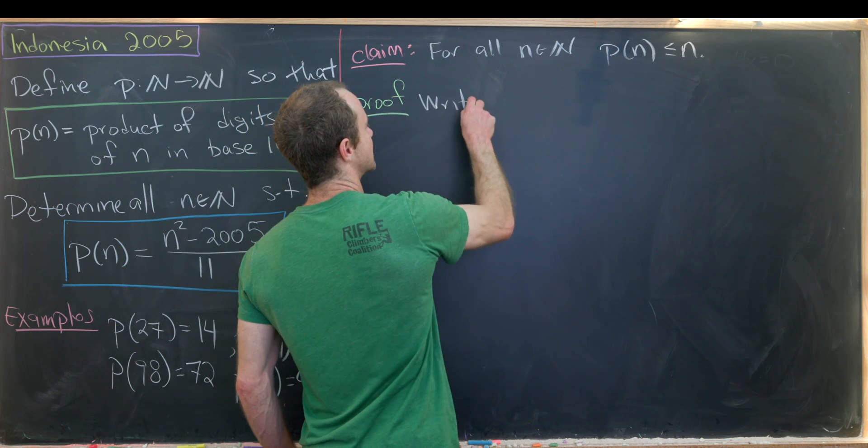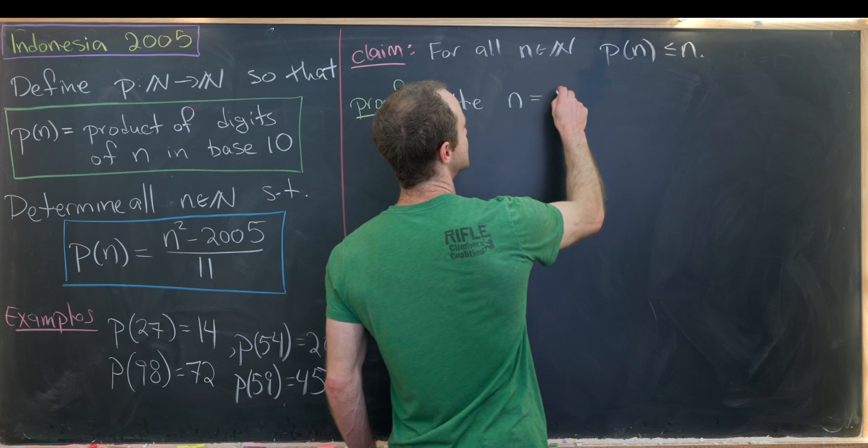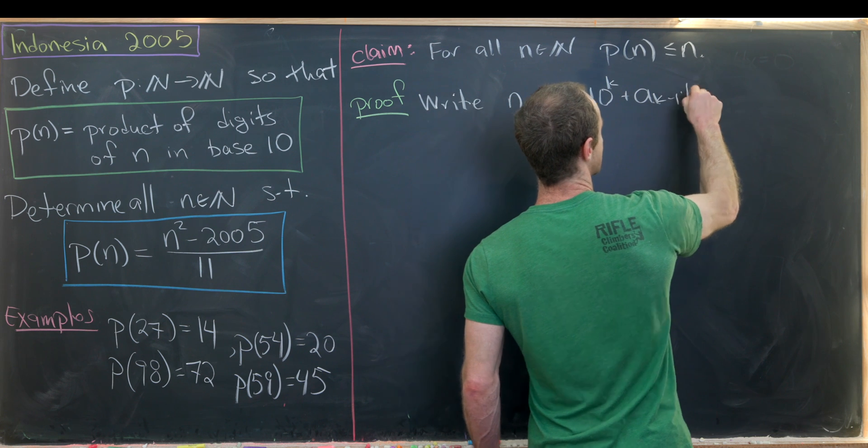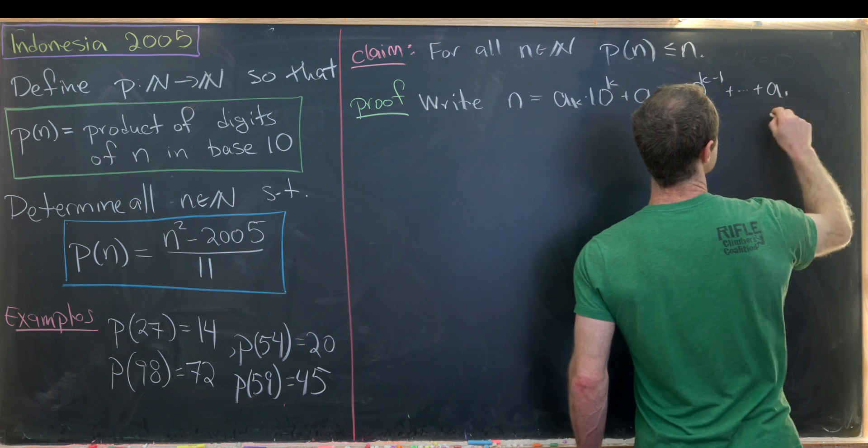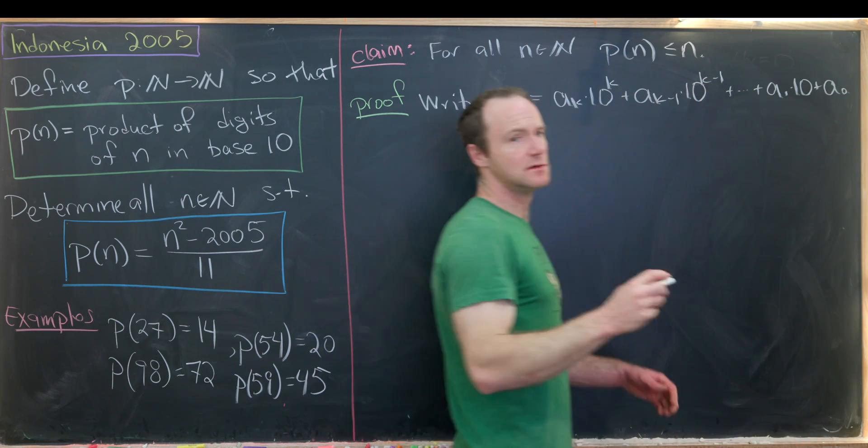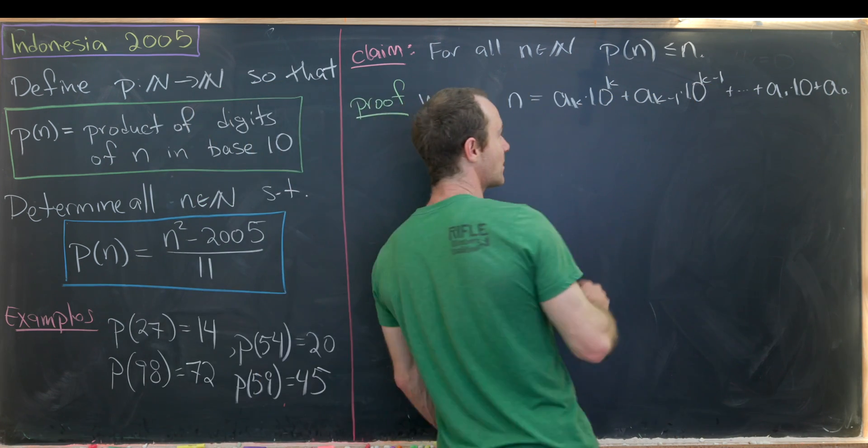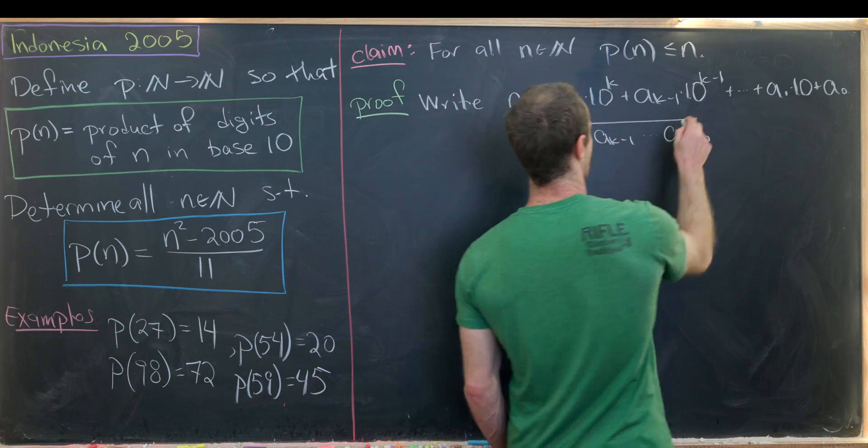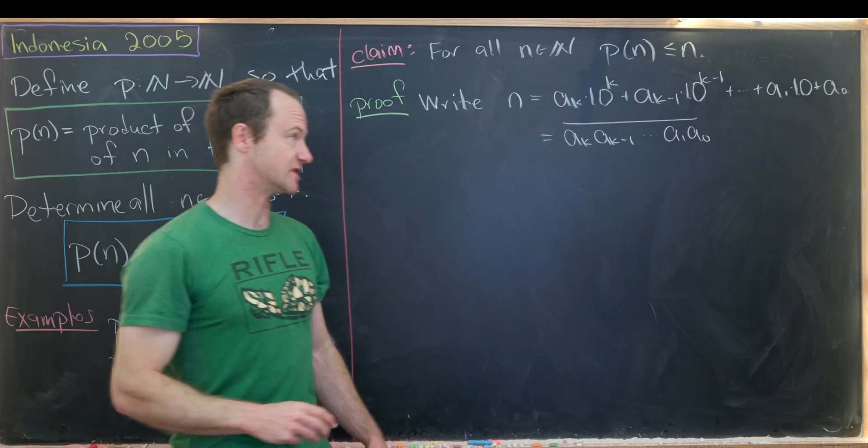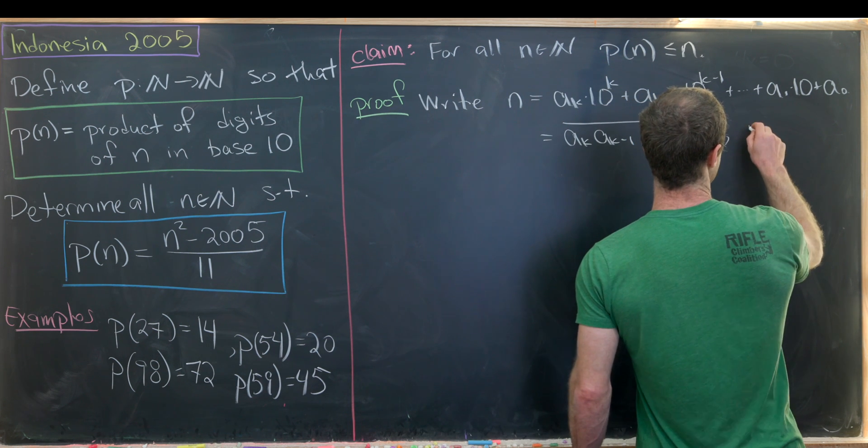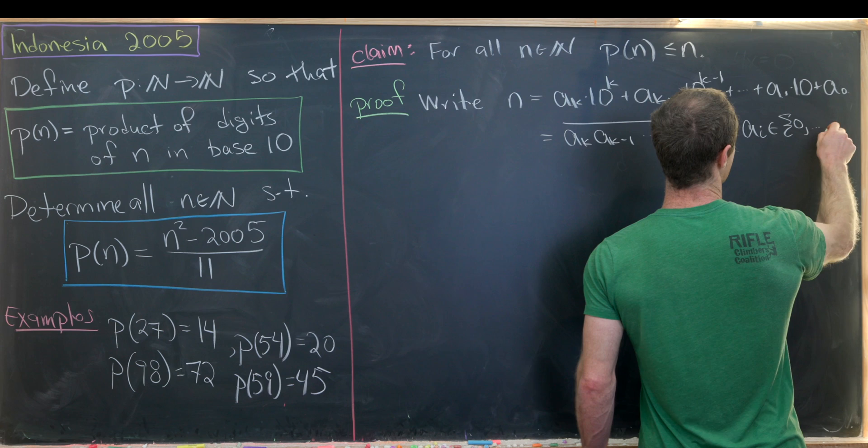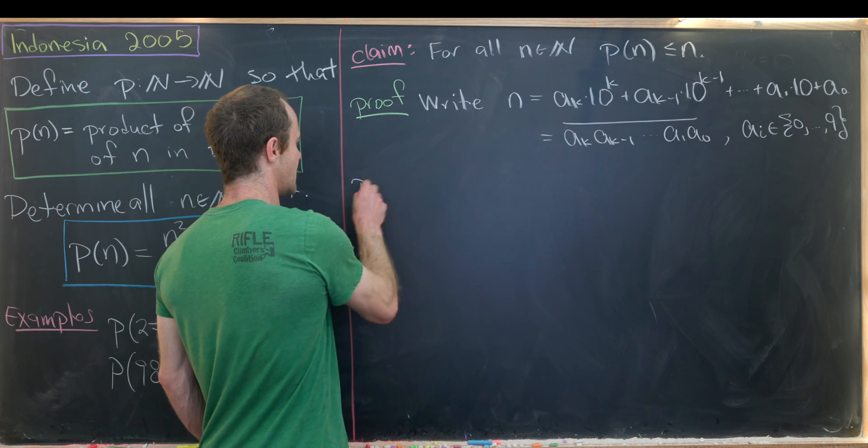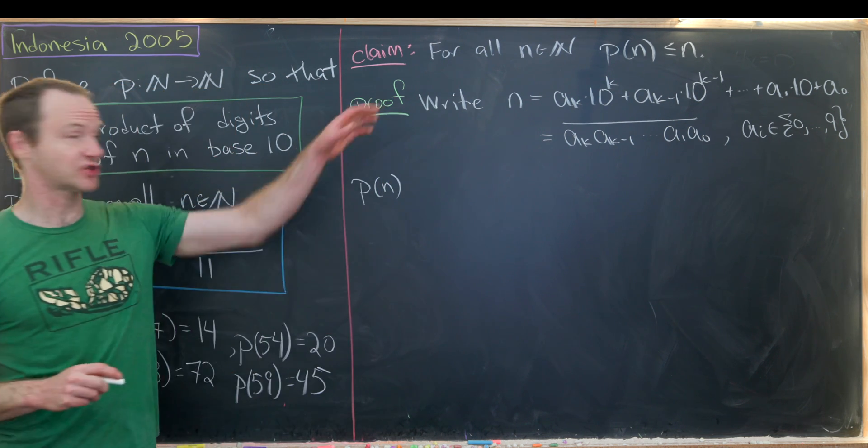So let's write our natural number n expanded in terms of its digits. So maybe I'll write it as a sub k times 10 to the k plus a sub k minus 1 times 10 to the k minus 1 all the way down to a sub 1 times 10 plus a sub 0 times 10 to the 0 which is 1. And so this would maybe be written as a_k a_(k-1) all the way down a_1 a_0 with a bar over it. That's a standard way of writing something in terms of its digits. And maybe it's important to point out here that a sub i comes from the set 0 to 9 given that we're working base 10.